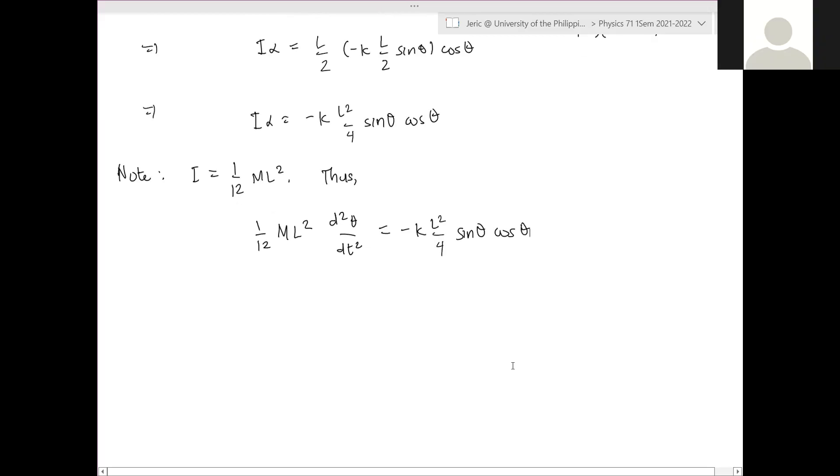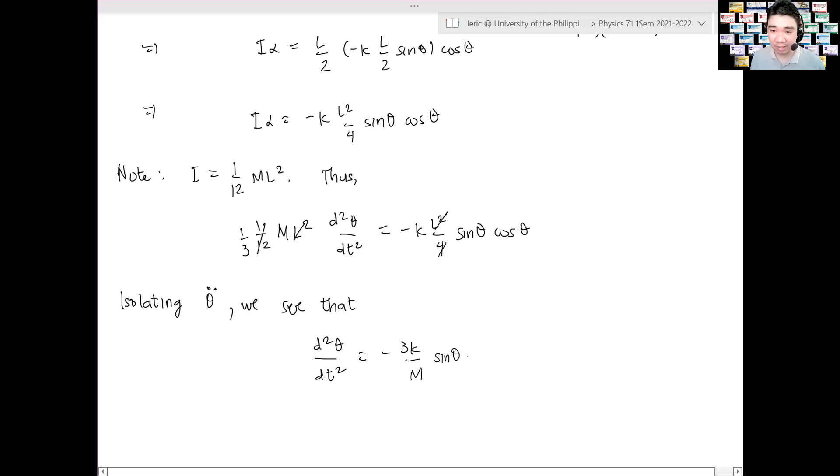But what is I? But note that I is equal to what? What is it? It's the moment of inertia about the center of mass, which is 1 over 12 M L squared. Thus, we have 1 over 12 M L squared d squared theta dt squared, because the angular acceleration is the second time derivative of the angular displacement. It's equal to minus K L squared over 4 sine theta cosine theta. Right? Right? Got it? Gets? Understand? I hope you understand. The L squared will cancel. The 1, 12, and 4 will cancel, and you'll have 1 third here. So, what I'll do is isolate d squared theta dt squared.